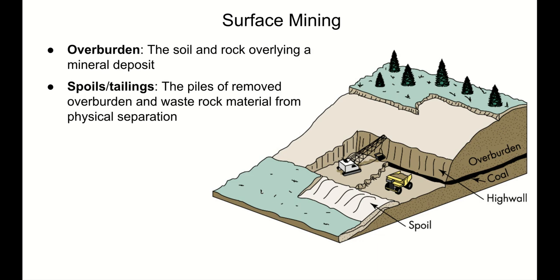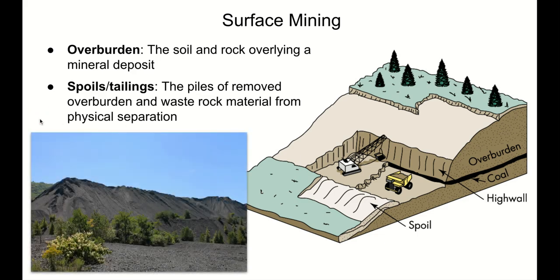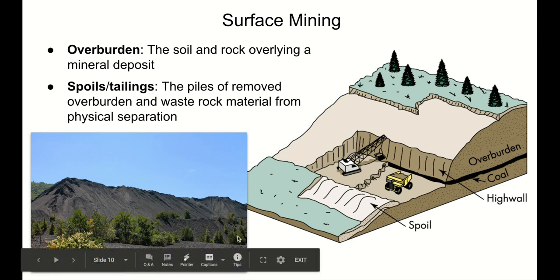Spoils or tailings are the piles of removed overburden and waste rock material from physical separation. We've got our overburden shoved off to the side, and eventually waste rock from physical separation gets added to the pile. These spoils piles are literally mountains of gravel, rock, dirt, and torn-up plants. This is actually a smaller spoils pile and you can't even see where the land originally was — it's underneath the surface of this spoils pile.